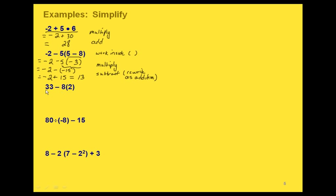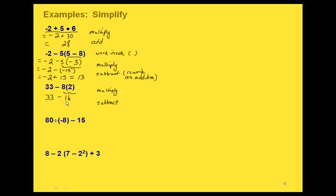On to the next problem. In this one we have a subtraction and a multiplication, so our first step is to multiply. We have 33 minus, and then 8 times 2 is 16. Then we're going to subtract, and we can just subtract these two directly to get 17.